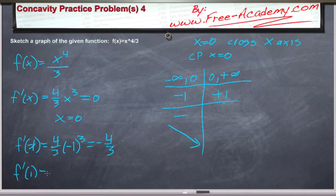f prime of positive 1 is 1 to the 3rd power, which is pretty clearly going to equal 4/3. It'll be positive, that means we're increasing. So when you go from decreasing to increasing, you have a minimum. So x equals 0 is going to equal a minimum. And it also nicely occurs where it crosses the x-axis, so it's actually the point (0, 0) is our minimum.